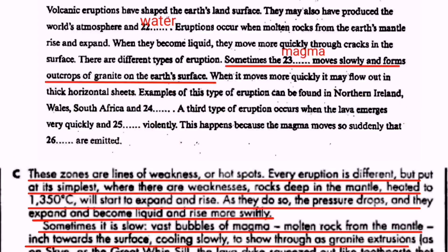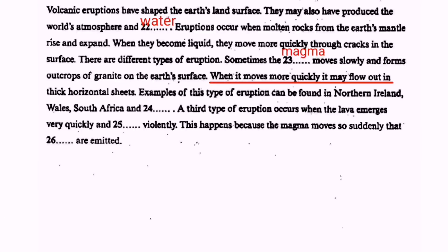Continuing further in the passage: 'Vast bubbles of magma, molten rock from the mantle, inch towards the surface, cooling slowly to show through as granite extrusions.' Granite and magma are both mentioned in the summary. When magma moves more quickly, it may flow out in thick horizontal sheets. Examples of this type of eruption can be found in Northern Ireland, Wales, South Africa, and blank — so the answer to question 24 will be another country or area.